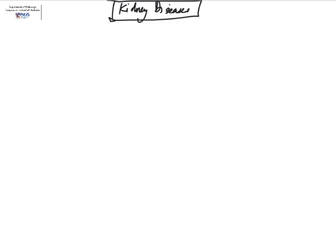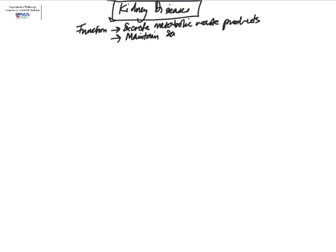Hello, so here we are going to look at kidney diseases. Just a quick recap of the function of the kidney — there are three main functions. One is to excrete metabolic waste products; the kidney secretes about one liter of urine per day. The next important function is to maintain salt and water balance, partly via the renin-angiotensin system. The kidney also has additional endocrine functions, such as producing erythropoietin, which is responsible for regulating erythropoiesis.